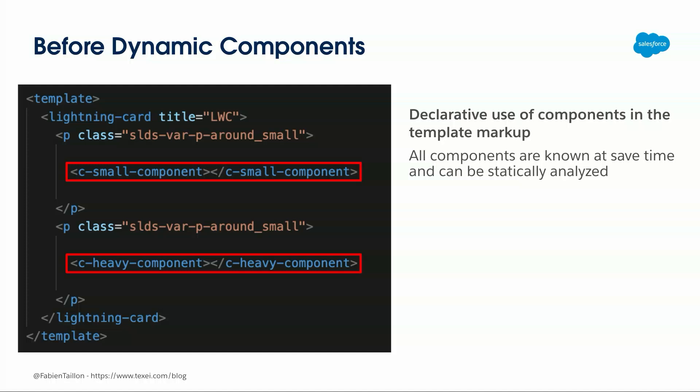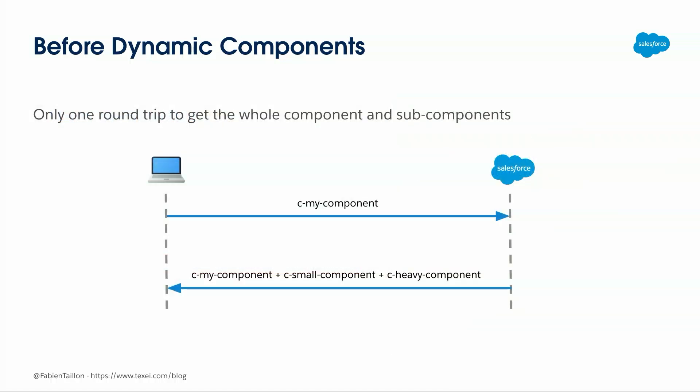Let's take a deeper look at the implications. Before Dynamic Components it was simple: one parent component with all child components in the markup. When you load the page, everything downloads at one time. The server is called to get your component as part of the page load, and everything — the component and all its children — is downloaded at once because it's all in the markup. Salesforce is able to know which components you need to load your page.